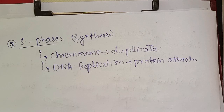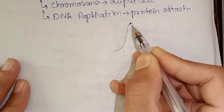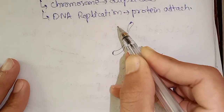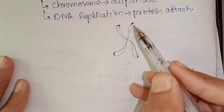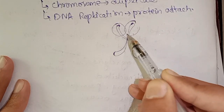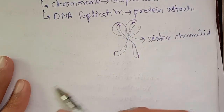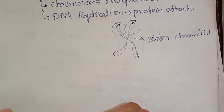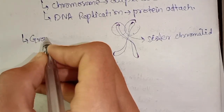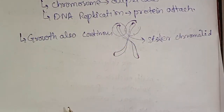After replication, each chromosome consists of two sister chromatids. Cell growth continues throughout the S phase, and the synthesis of proteins and enzymes involved in DNA synthesis also takes place.